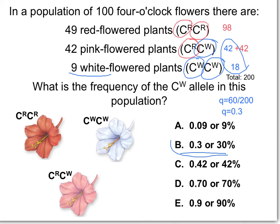This method of directly counting alleles — pretty much all we did was count and add up the number of alleles — works only if you can distinguish the heterozygotes from the homozygous dominant. If you know the genotype of all individuals in the population, you can directly count all the alleles and get the frequency of each one.